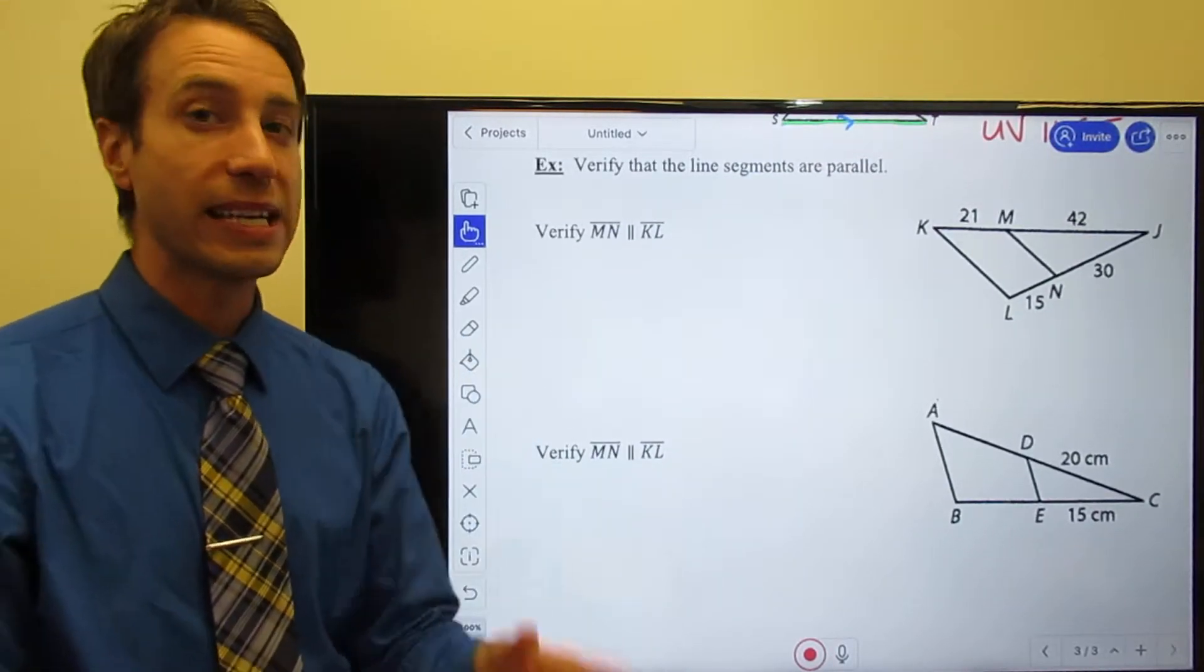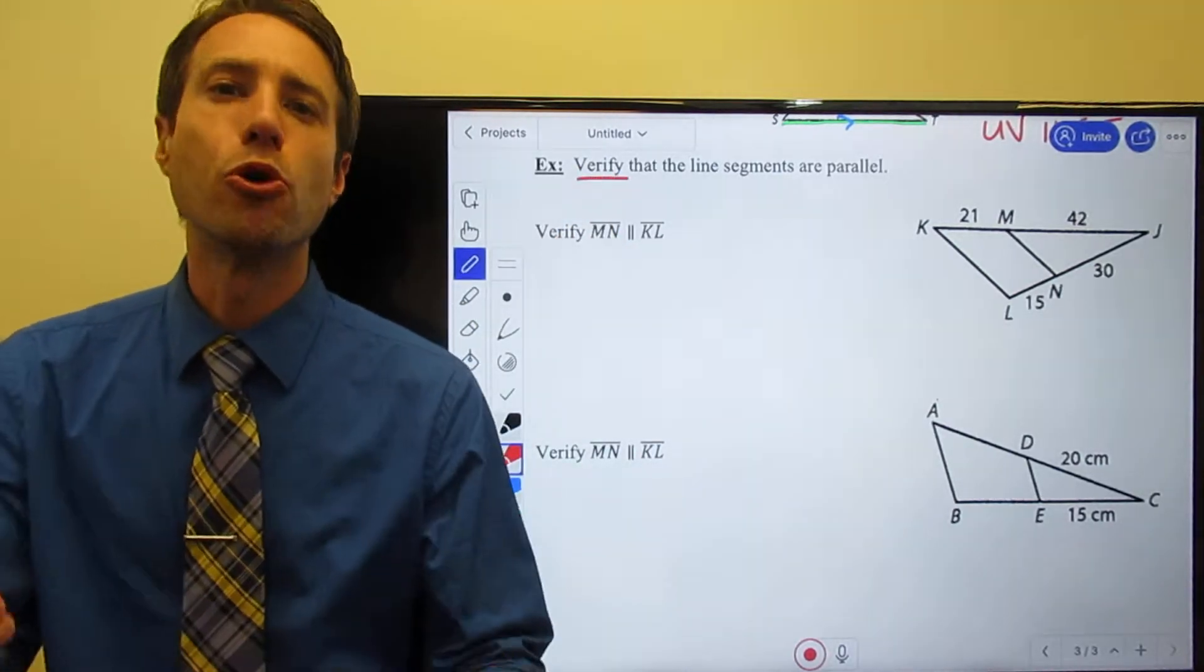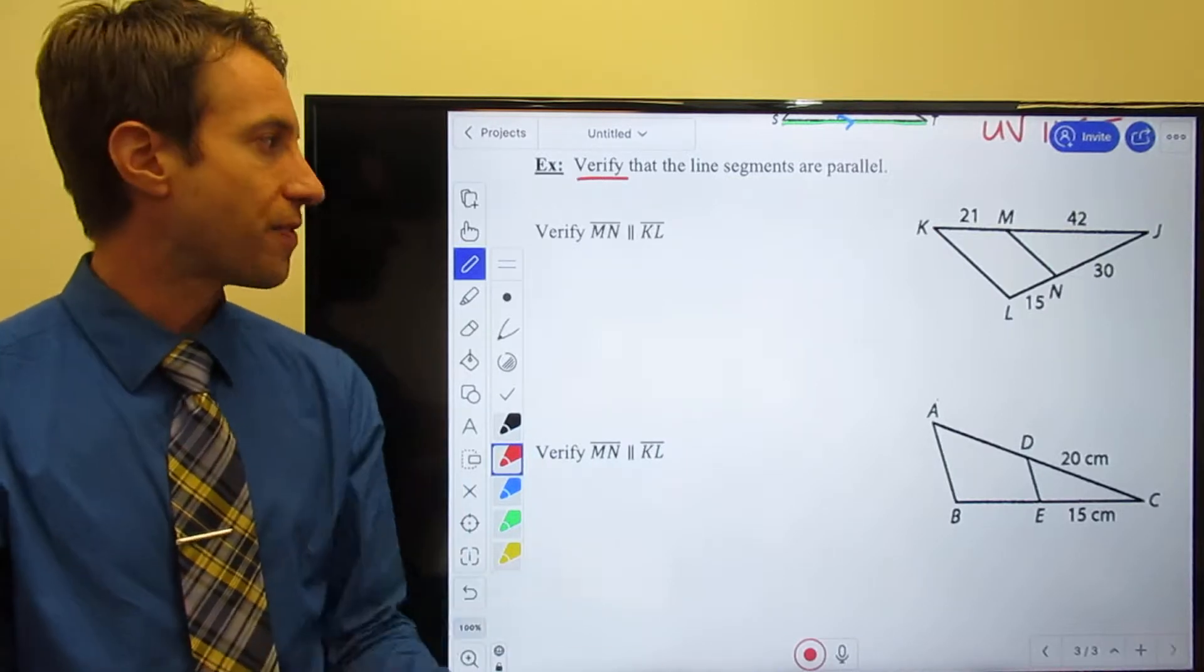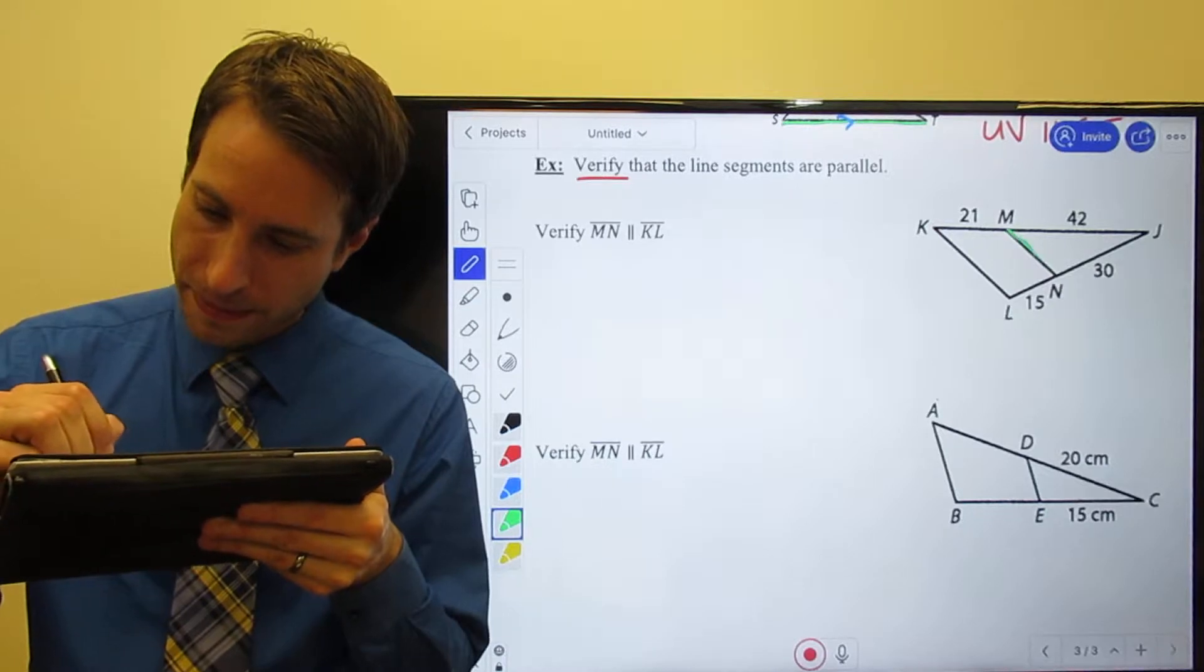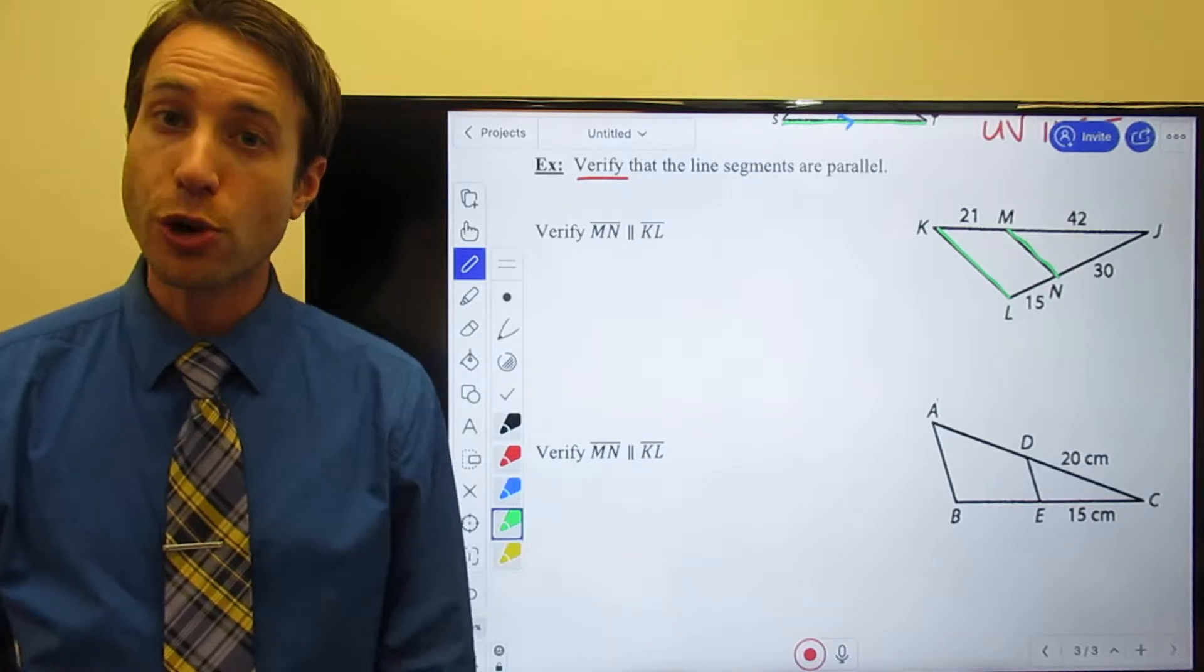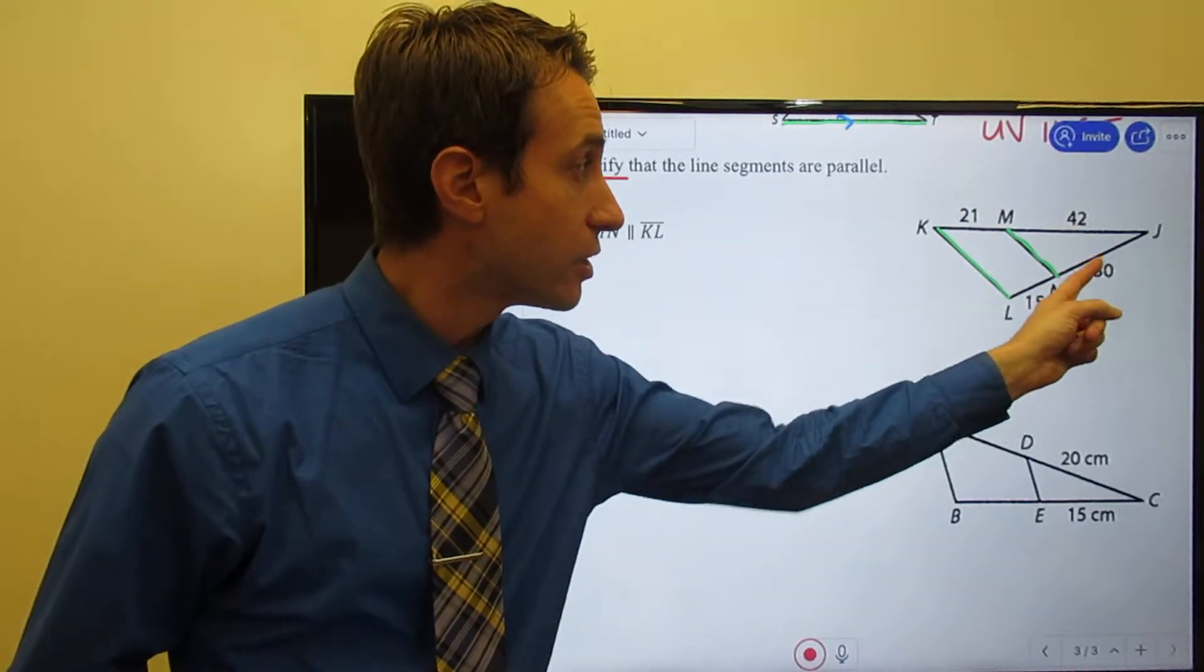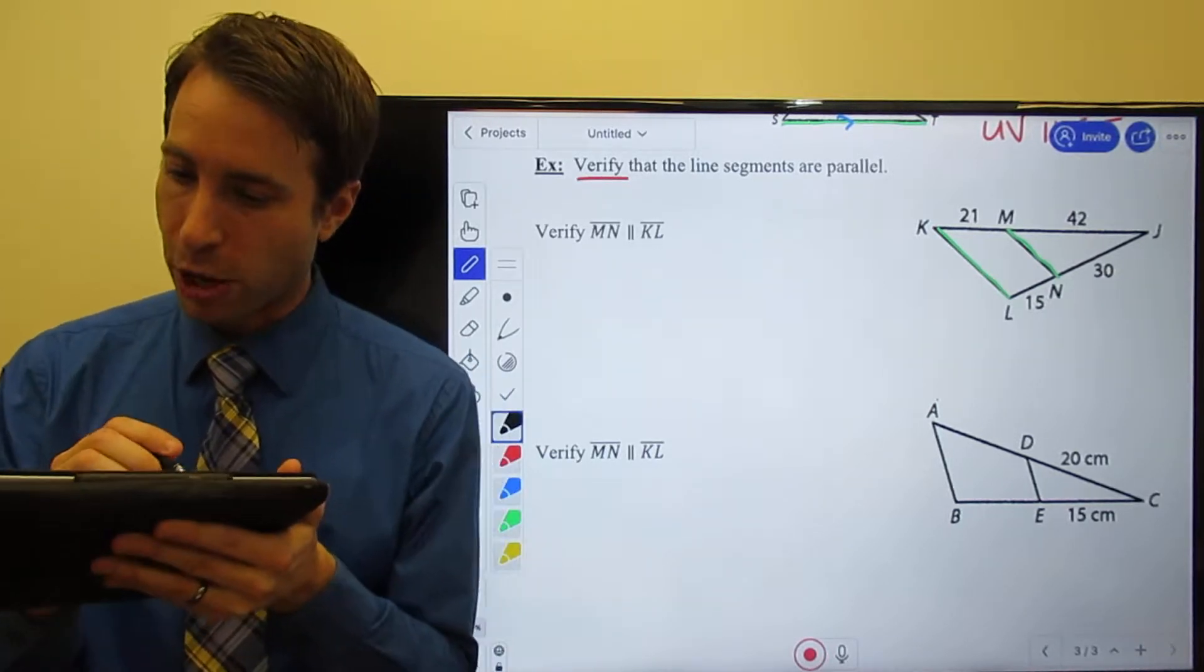So all I'm asking you to do is verify, prove, make sure that this is true. I want you to verify that the line segments are parallel. Please verify that MN and KL are parallel. Well, here they are right here. There's MN and there's KL. Are they parallel? Well, in order to show that they're parallel, thanks to the converse of the triangle proportionality theorem, if I can show that the sides are divided proportionally, then I know that they are. So let's write our proportion.